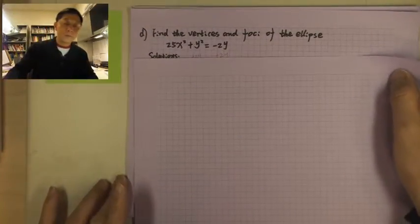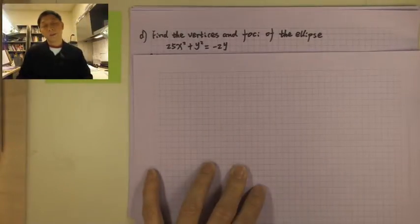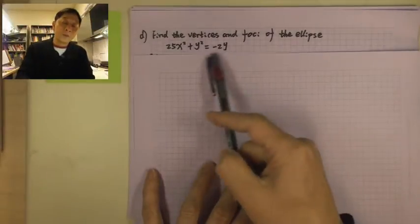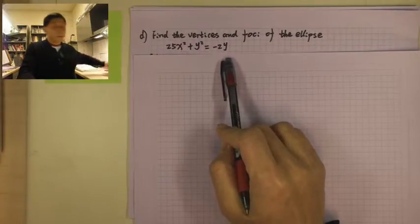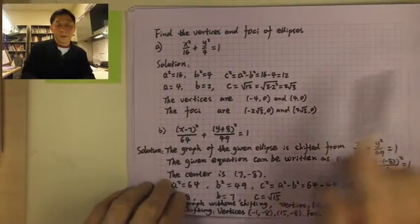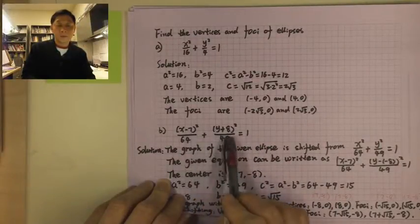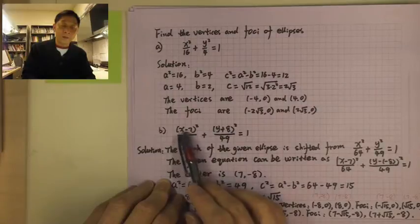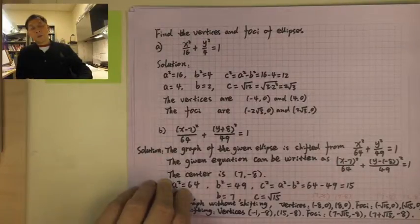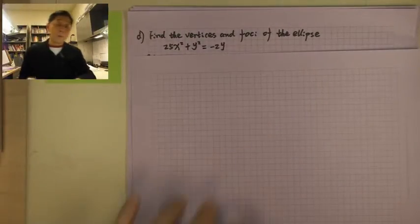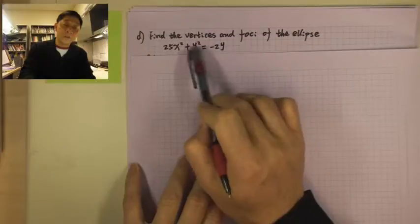Now let's do Example D. D also asks to find the vertices and foci of the ellipse. This is not in standard form. In standard form, the right-hand side is always 1, and on the left we have complete squares for x and y with their coefficients in the denominator. For this one, we need to make y a complete square. There is a negative 2y on the right, so we need to move it to the left.